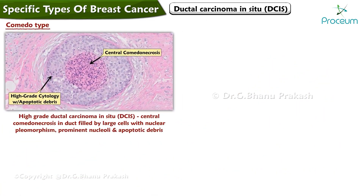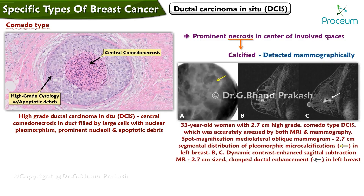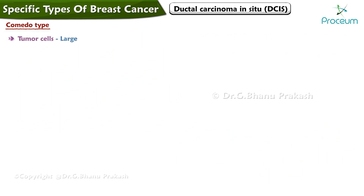The comedotype is characterized by prominent necrosis in the center of the involved spaces. The necrotic material frequently becomes calcified, and these calcifications may be detected mammographically as linear branching casting calcifications. The tumor cells are large and show nuclear pleomorphism, and mitotic activity may be prominent.